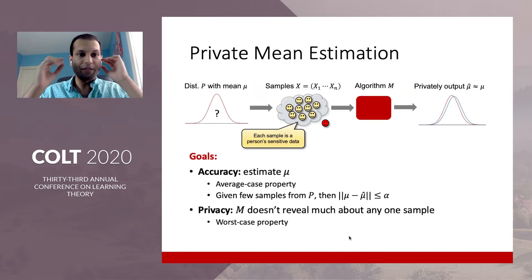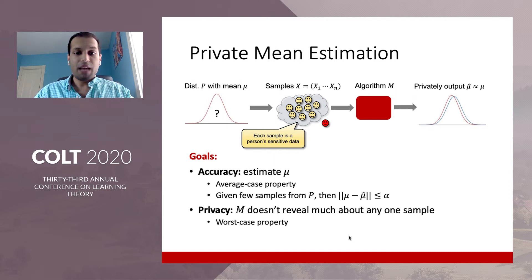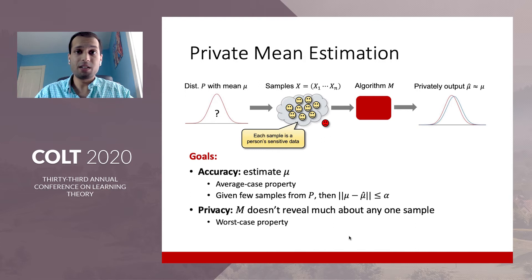I'm going to start by introducing the notion of private mean estimation. Mean estimation is a fundamental problem in statistics which has been studied extensively both with and without privacy. In the privacy context, we have sample access to an unknown distribution p with mean mu, and our goal is to privately output an estimate mu hat of mu. Our algorithm must satisfy two properties: accuracy, which means that with high probability we output an estimate mu hat which is at most alpha far from mu in Euclidean distance; and privacy, which says the algorithm should not reveal much about any single sample, for all samples, regardless of the distribution they come from.